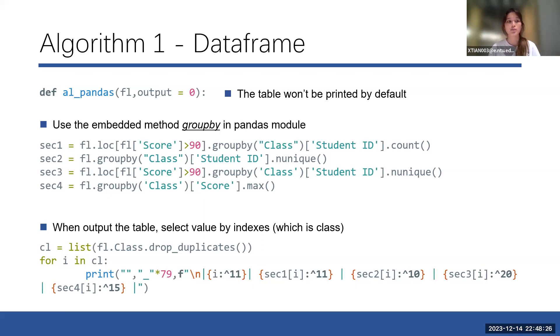Which is class 1 or class 2. In designing these functions, I set a parameter output, which by default is 0. It means that the table won't be printed by default.